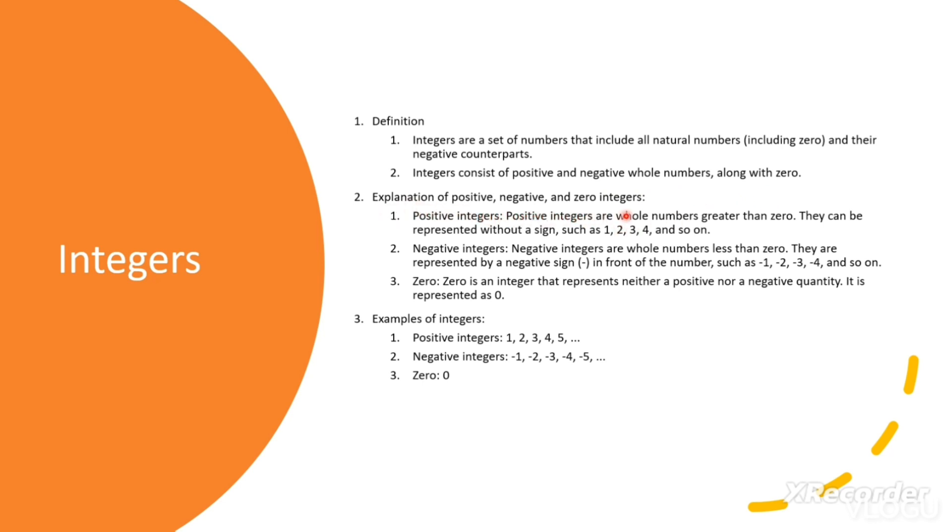Explanation of positive, negative and zero integers. Positive integers: Positive integers are whole numbers greater than zero. They can be represented without a sign such as 1, 2, 3, 4, etc.